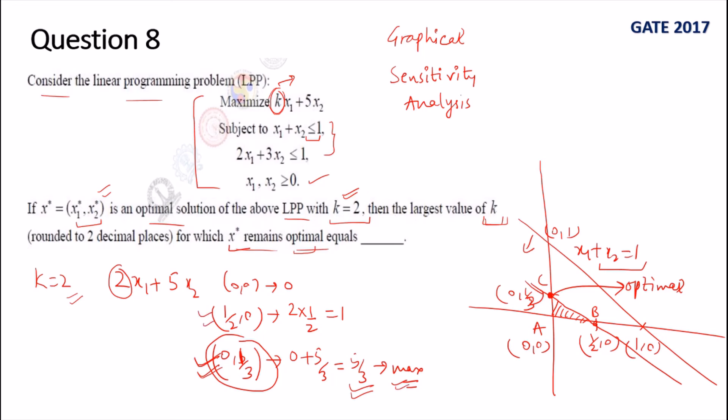But here the value will change because this is 2*x1 + 5*x2. So if we make 2 into 3, this value becomes 3 × 1/2 which is 3/2. If we make k's value 4, this becomes 4 × 1/2 which is 2. So you can see this 5/3 is 1.6667 and this is currently 1.